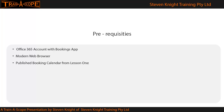Briefly, the prerequisites we need to follow along and complete these exercises are: an Office 365 account with the bookings app available, a modern web browser, and the published booking calendar from Lesson 1.